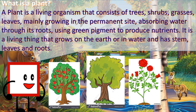What is a plant? A plant is a living organism that consists of trees, shrubs, grasses, and leaves, mainly growing in a permanent site, absorbing water through its roots, and using green pigment to produce nutrients.